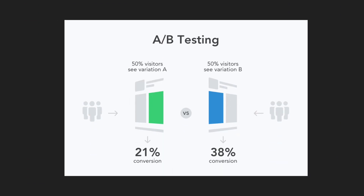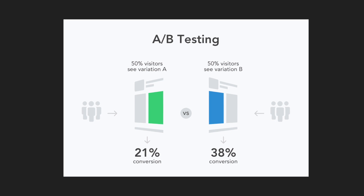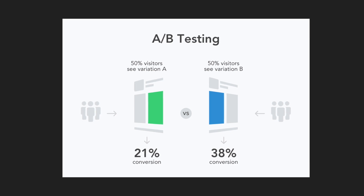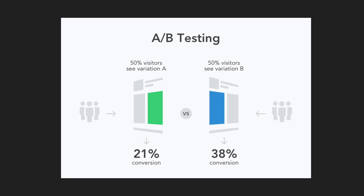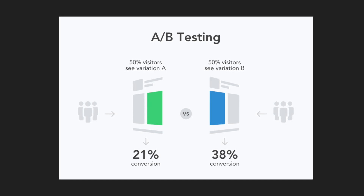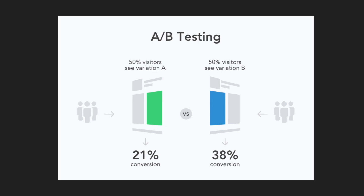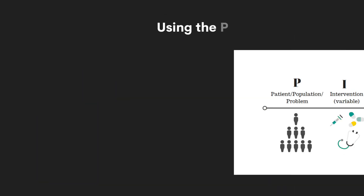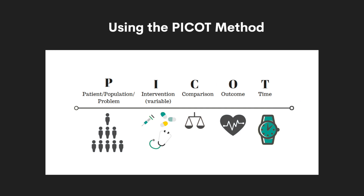Your alternative hypothesis says that there will be a statistically significant difference between your control group and your test group, meaning there is a difference between the new feature and your existing feature. A good way to start an A-B test is to think about your hypothesis using the PICOT method — P-I-C-O-T — which stands for Population, Intervention, Control, Outcome, and Time.